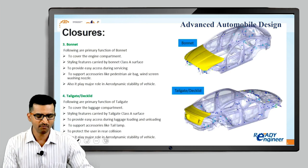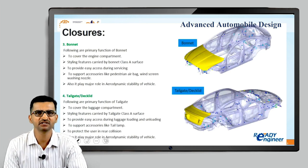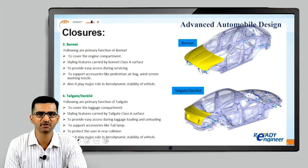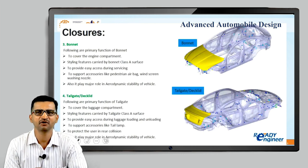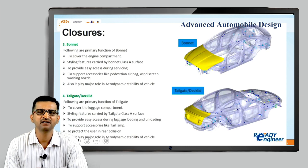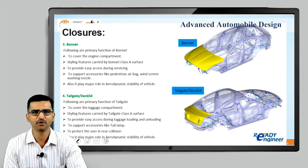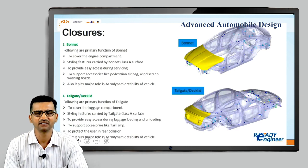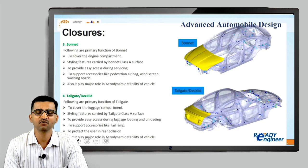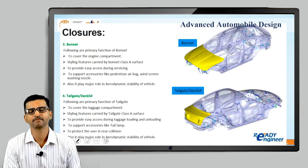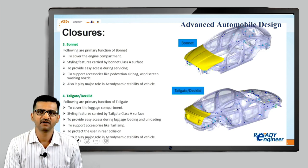Moving on to bonnet. The most important function of the bonnet is to cover and protect the engine compartment. But that is not the only function — the bonnet is also a main aesthetic member. It plays a very important role in the aesthetics, that is the looks, of the car. If the bonnet is not given a proper shape, that can ruin the look of the car. Car companies take much effort in designing the bonnet.